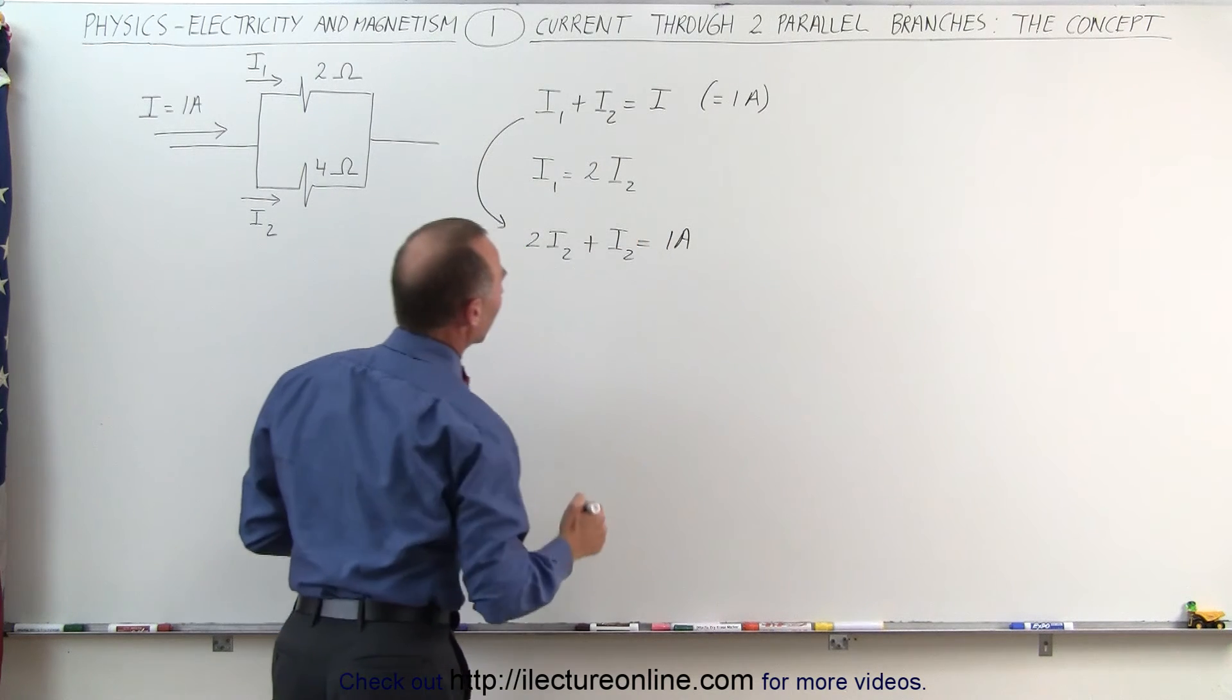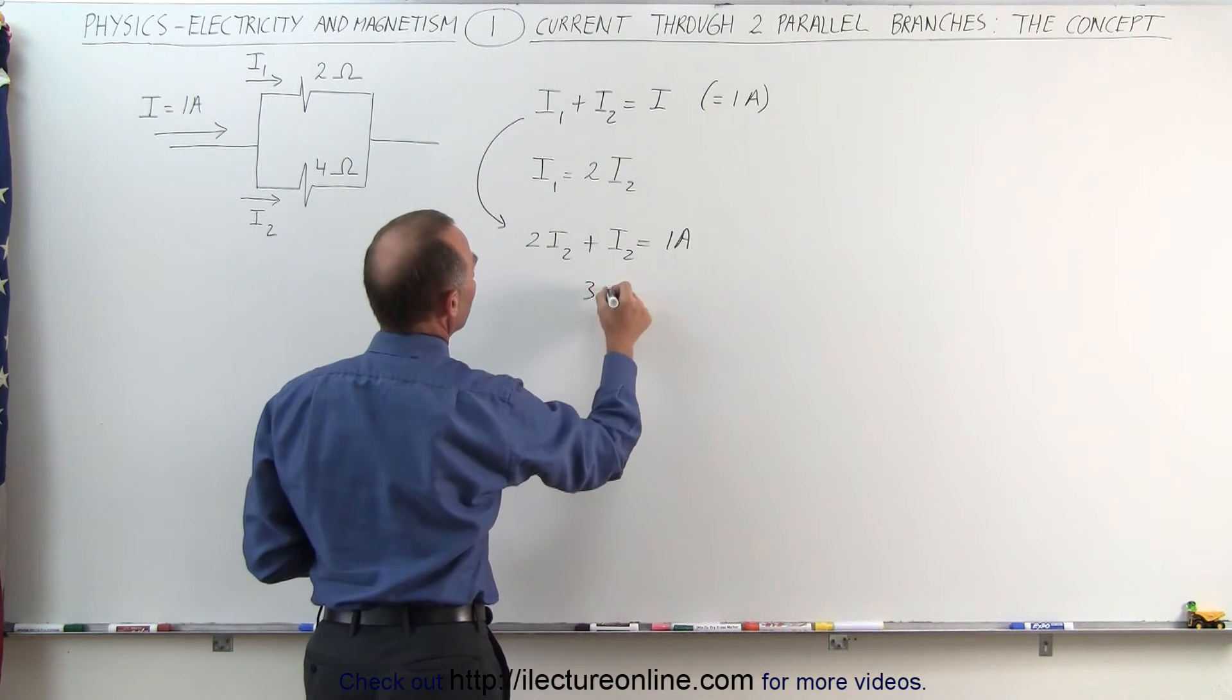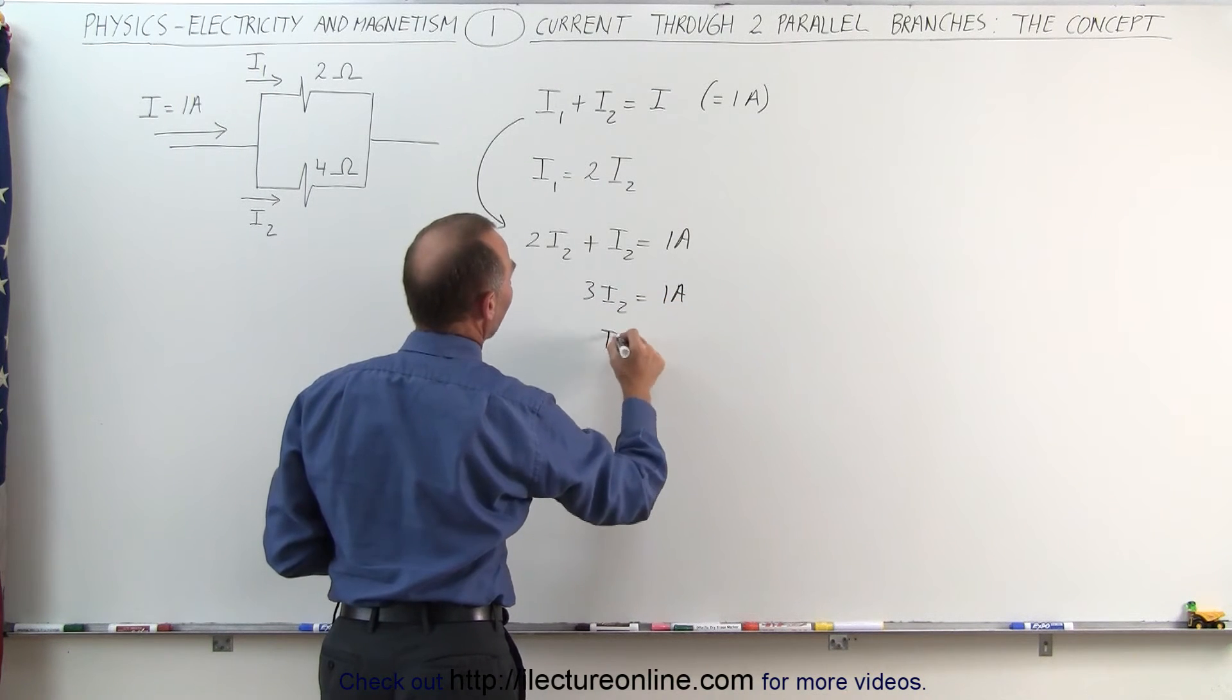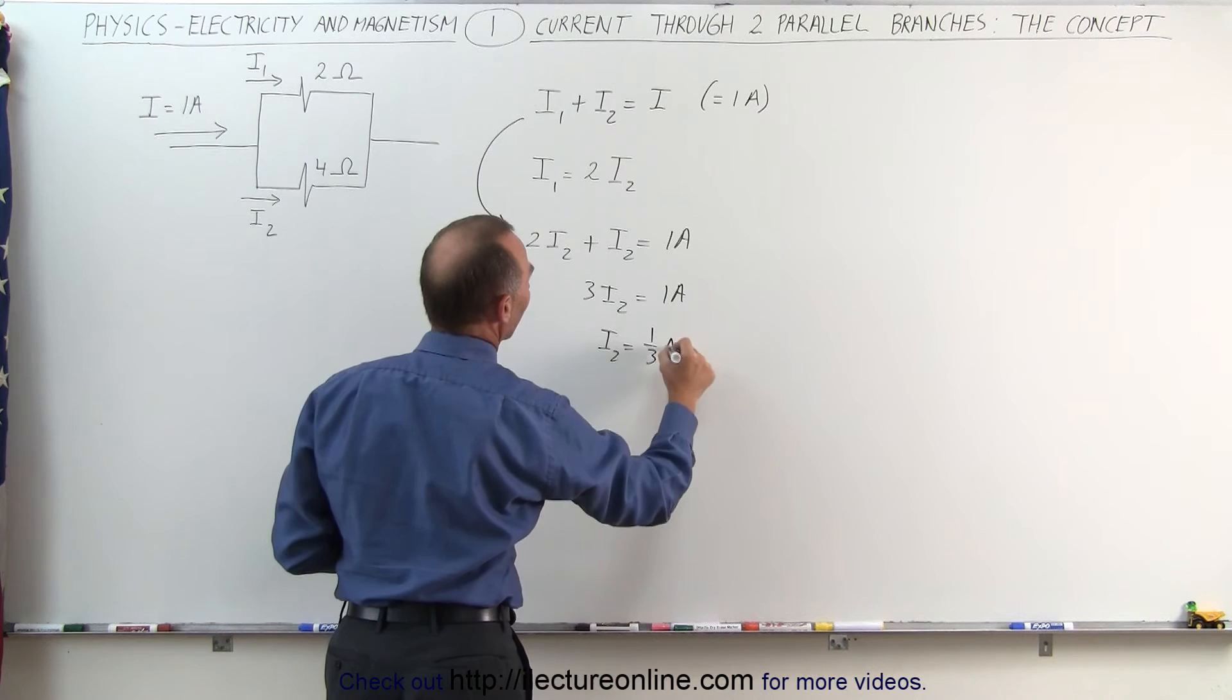which is the total current in the third branch. Therefore, three I2 will be equal to one amp, which means that I2 will be one-third of an amp.